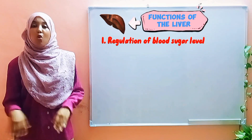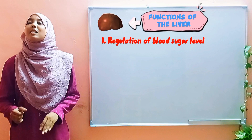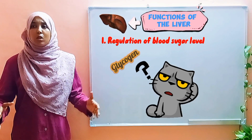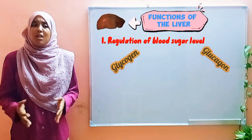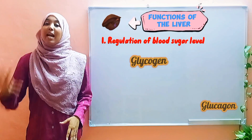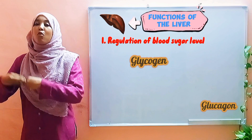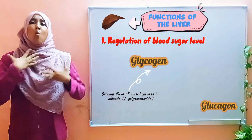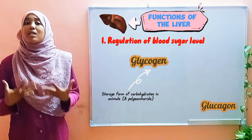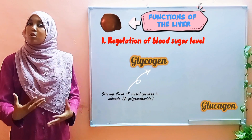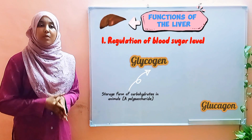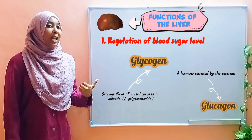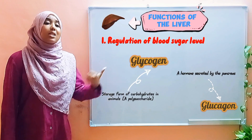There's another hormone — glucagon. I know it can be confusing: glycogen and glucagon, those two terms almost seem the same. But glycogen is the storage form of carbohydrates in animals — when we have excess carbohydrates in our bodies we store them in the form of glycogen. Glucagon, on the other hand, is a hormone secreted by the pancreas, and it is secreted when the blood sugar levels are low.